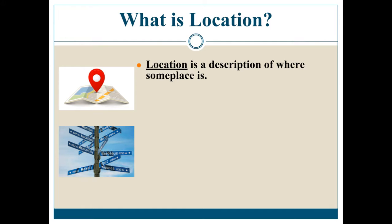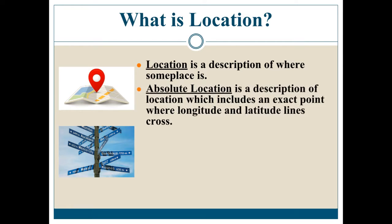But there are two other ways we can describe location. The first is called absolute location. When you hear the word absolute, I want you to think exact. Absolute location means exact location — a description of location which includes an exact point where a line of longitude and a line of latitude cross. If you're thinking about your x-y grid in math, longitude is the x-axis and latitude is the y-axis.